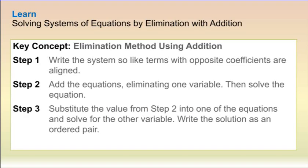How do you do elimination using addition? Step 1: write the system so that like terms are aligned. Step 2: add the equations to eliminate one of the variables. Step 3: substitute the value from step 2 and solve for the other variable. Write the solution as an ordered pair.